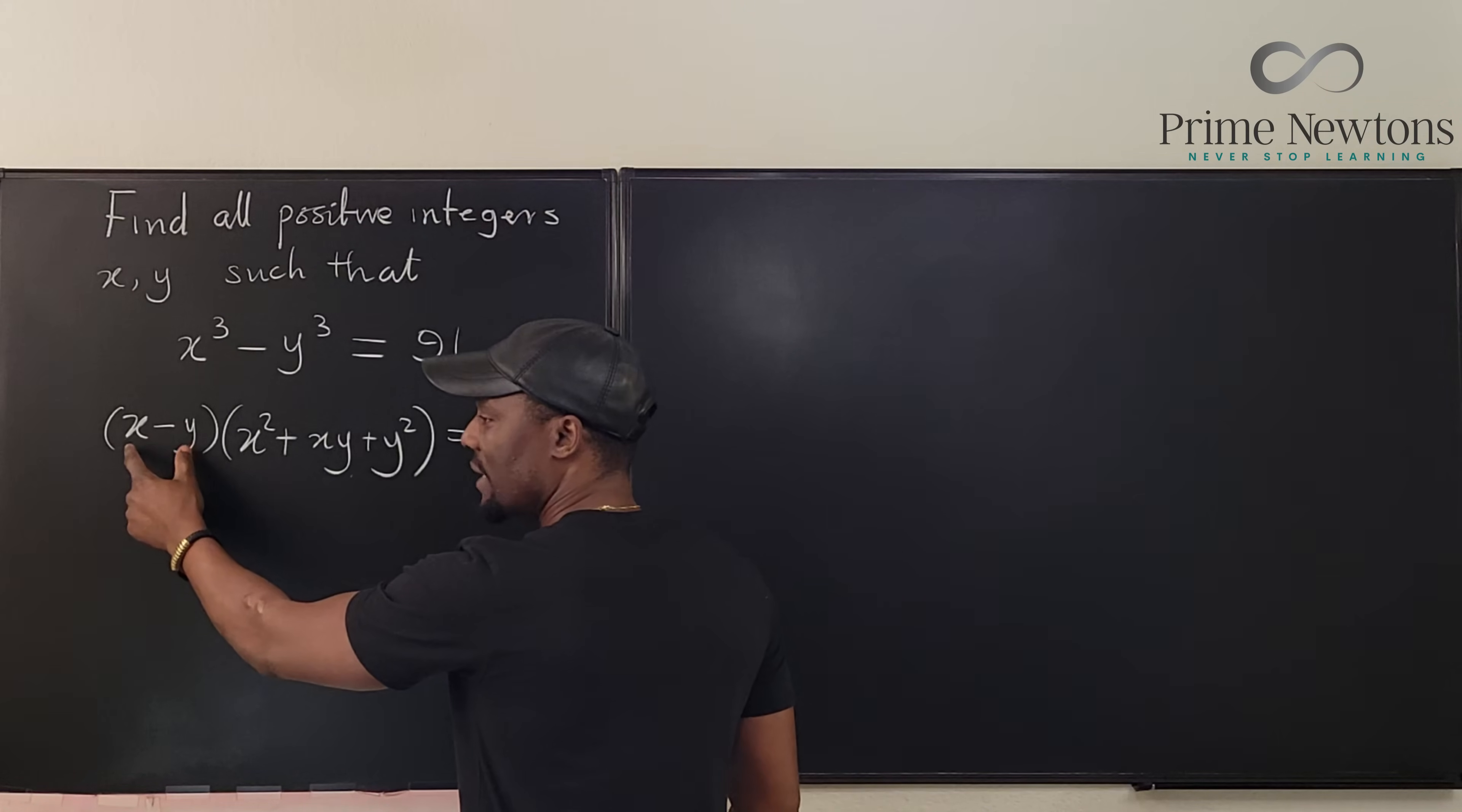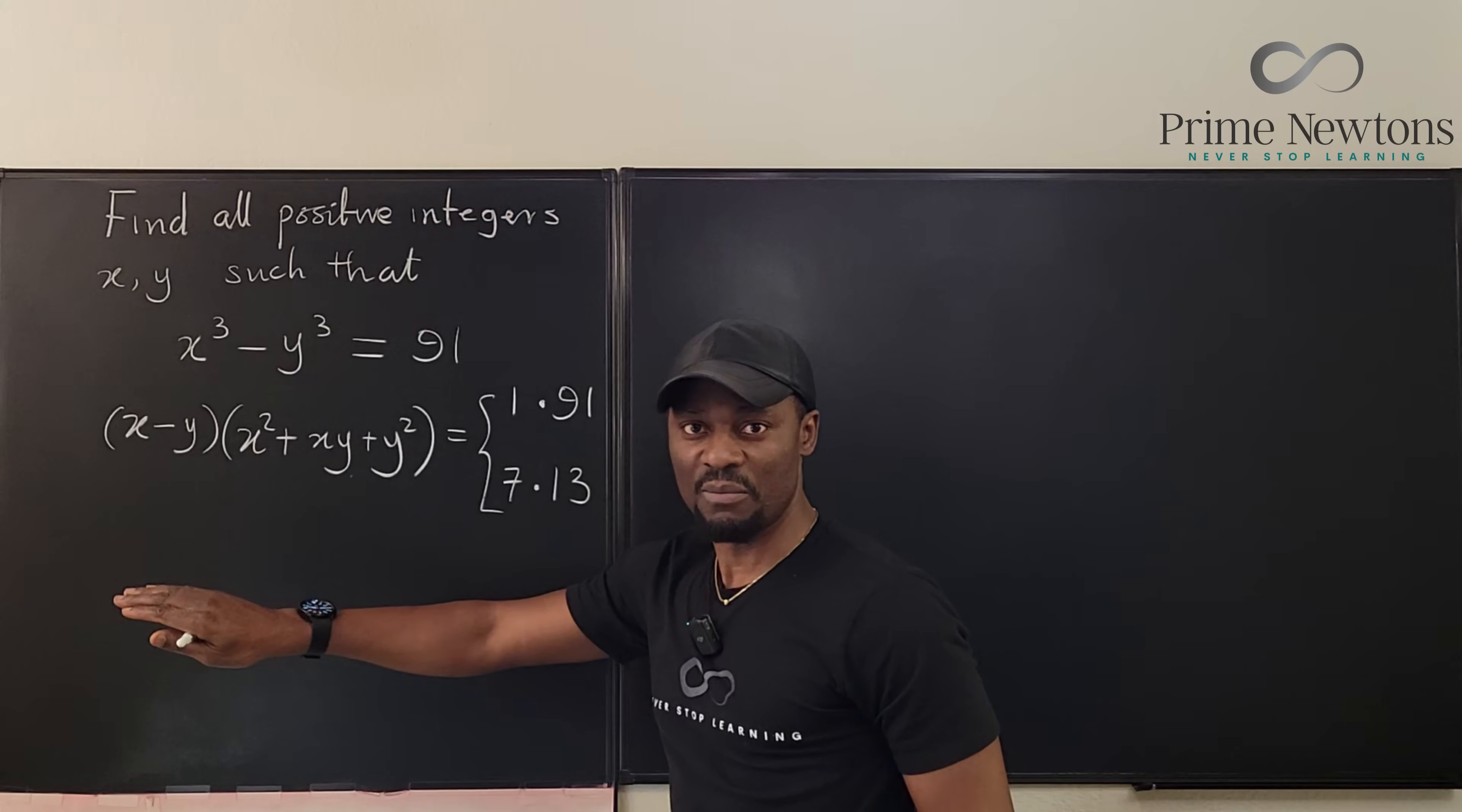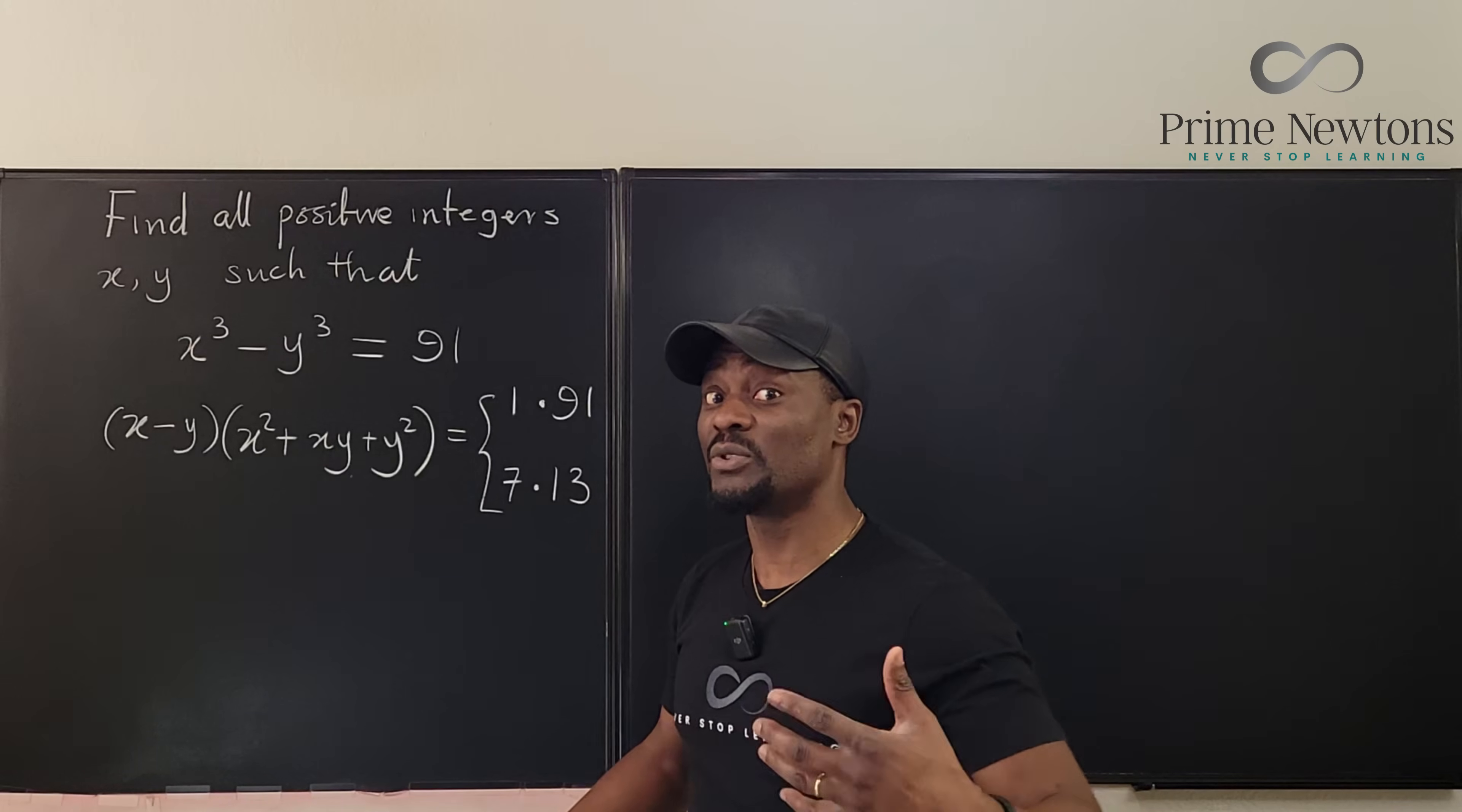So if you're subtracting two positive numbers, you're making it smaller. But now you square a number and you're adding positive numbers and then you have the product of positives. So clearly, this is the smaller number, this is the bigger number in both cases. So the first case you're going to apply is to say that x minus y equals 1 and this one is equal to 91, and we'll see if it is possible to make it work.